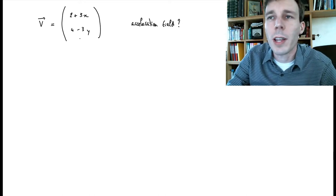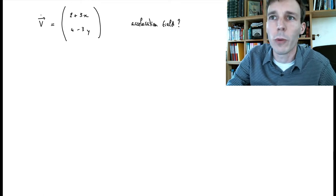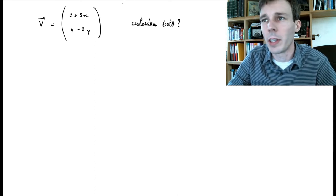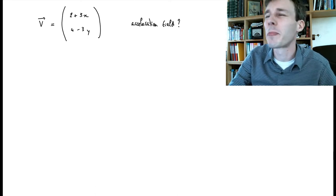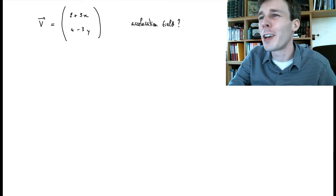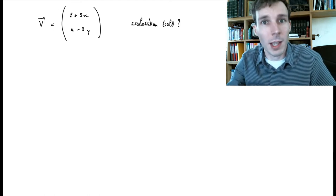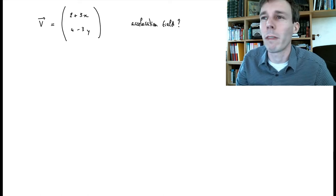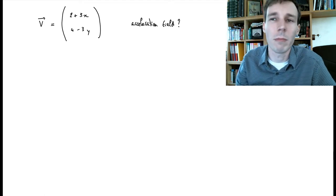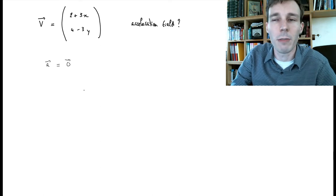In this problem we want to calculate the acceleration field given the properties of a fluid flow with this velocity field. We want to know the acceleration of every particle, everywhere, all the time. A shortcut answer that is wrong would be to say: since the velocity does not depend on time, the acceleration should also be zero. So the wrong answer would be that the acceleration field is zero everywhere, all the time.